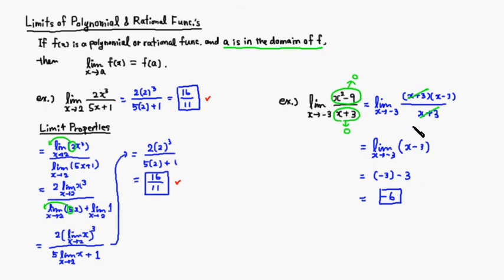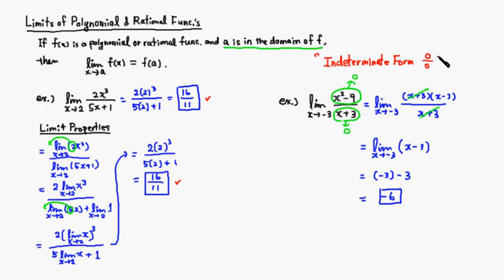When you plug in and get 0 over 0, this is called an indeterminate form. When you encounter the indeterminate form 0/0, try to factor so you can cancel the common factor. Once you've removed all common factors, plug in to find the limit. That's the strategy.